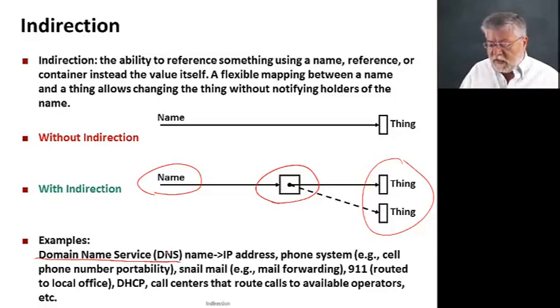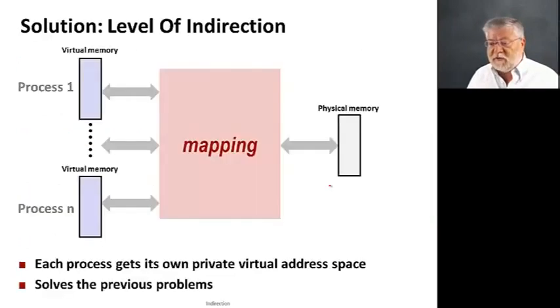And examples of these include things like the domain name service that helps you find the actual machines that host your websites on the web. The phone system, things that allow cell phone portability or find your cell phone depending on which cell tower you happen to be near. Mail forwarding at the post office is an example of indirection. Lots and lots of things that we use in our daily lives rely on this ability to go and look up things in a directory and then as a second step find the actual thing of interest rather than having a direct name for it in the first place. And this is going to be fundamental to how we build virtual memory.